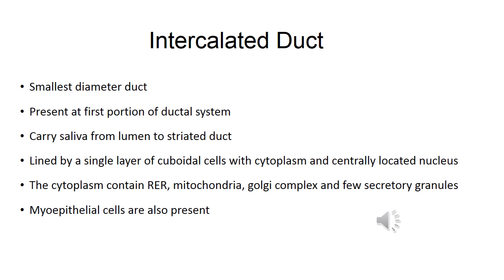The intercalated duct is the smallest diameter duct. It is present at the first portion of the ductal system and carries saliva from the lumen to the striated duct. Intercalated duct is lined by a single layer of cuboidal cells with cytoplasm and centrally placed nucleus.